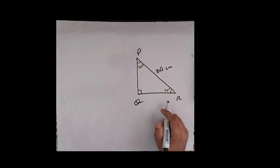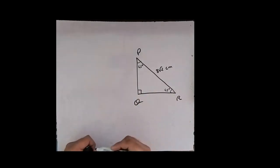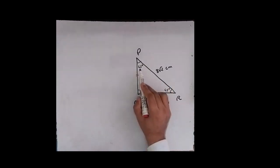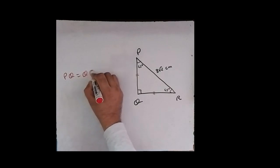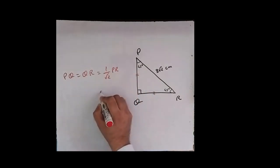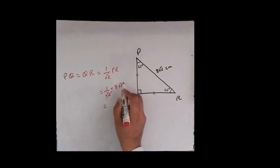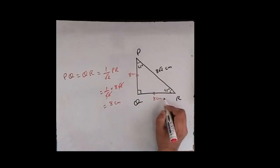I hope you all have got an answer. Triangle PQR is a 45-45-90 triangle. By the 45-45-90 theorem, the sides opposite to 45 degrees are PQ and QR. The theorem says that sides opposite to 45 degrees equal (1/√2) × hypotenuse. Substituting PR = 8√2, we get (1/√2) × 8√2. The √2 cancels, giving the answer as 8 centimetres. So PQ = 8 cm and QR = 8 cm.